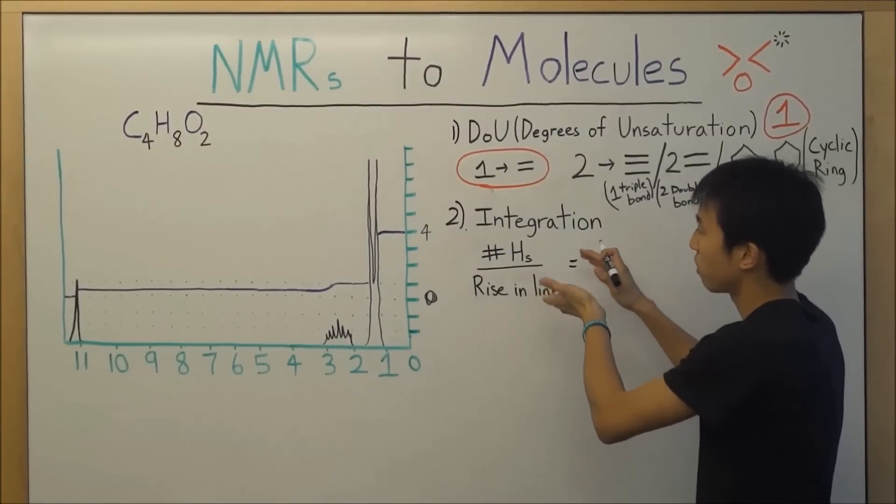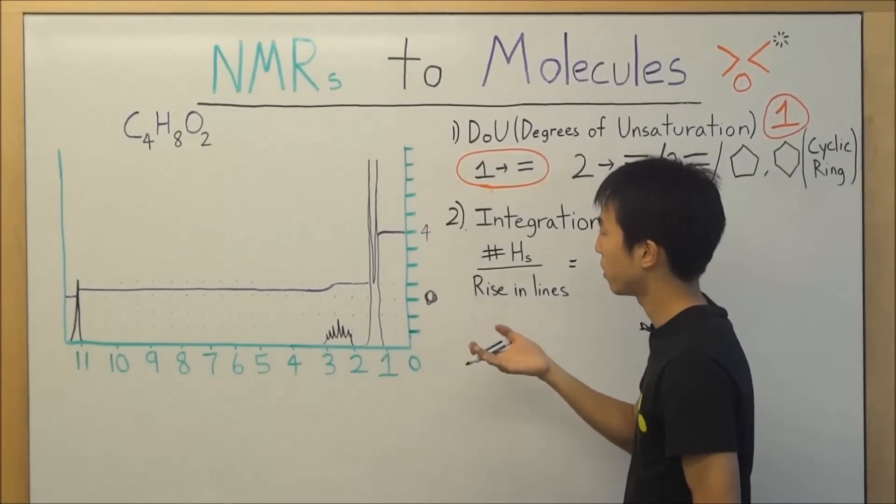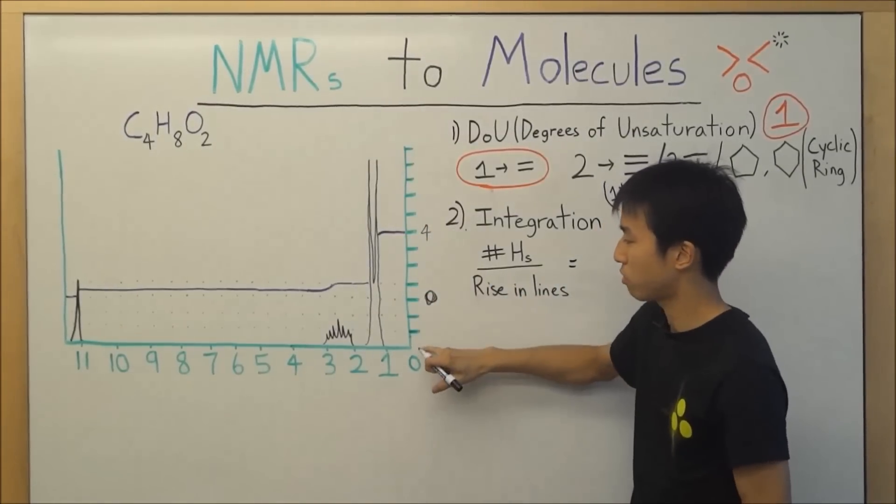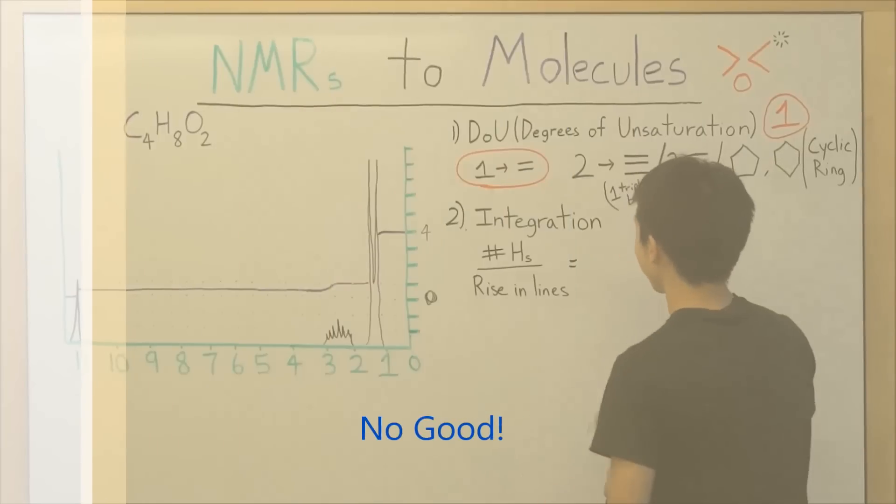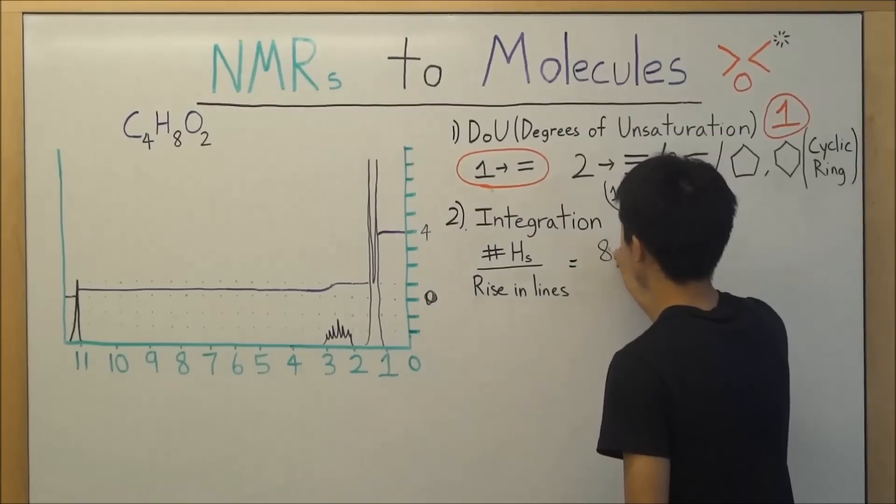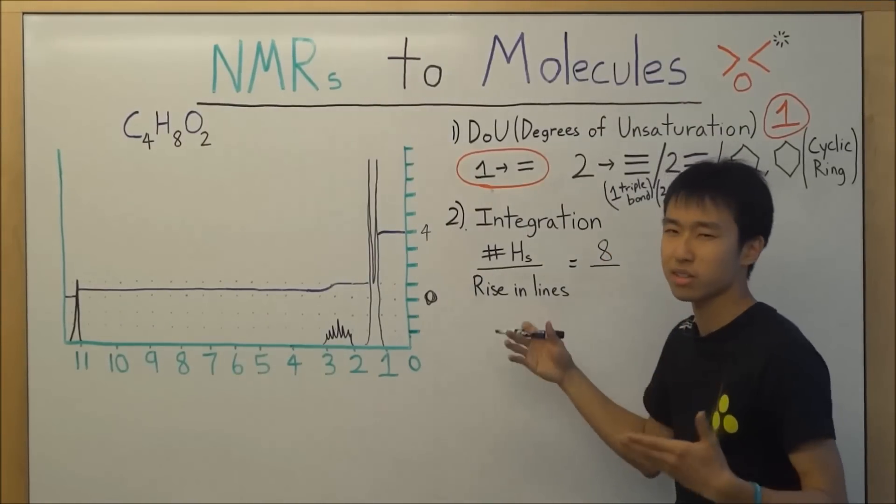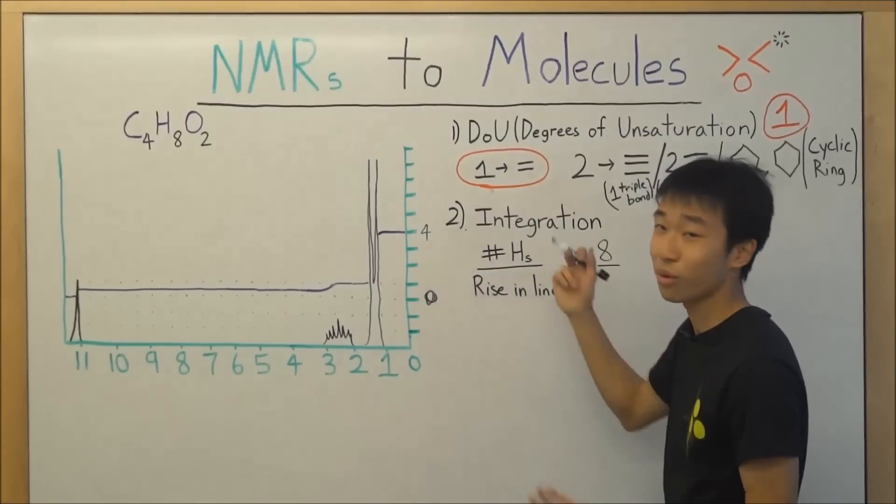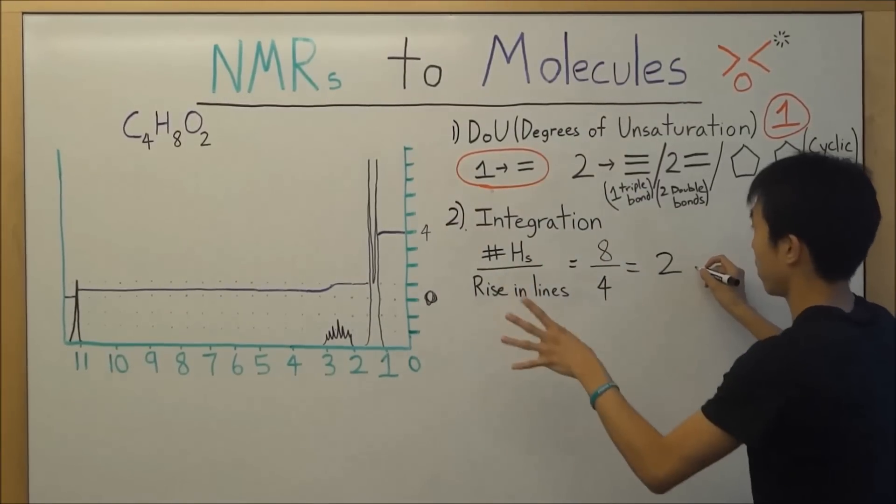The number of hydrogens divided by the rise in lines or basically the increase from baseline. The most common mistake that people make is that they start from here thinking that this is the baseline, so don't do that. All right, so the number of hydrogens that we have, we know from our chemical formula is eight, and then divided by the rise in lines or the number of lines actually in our molecule.